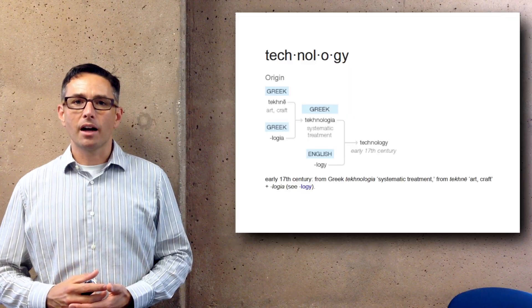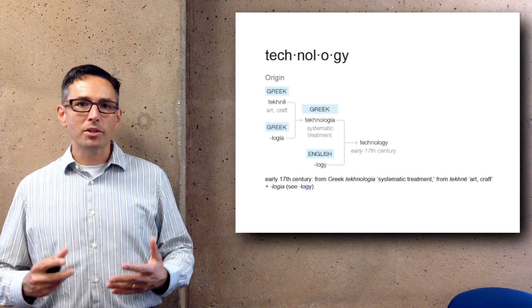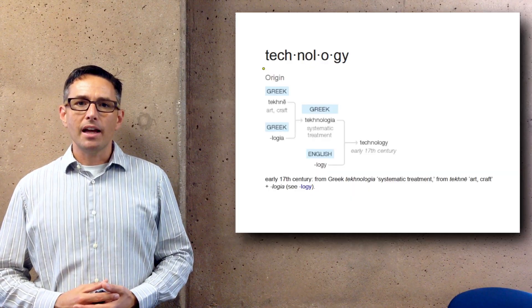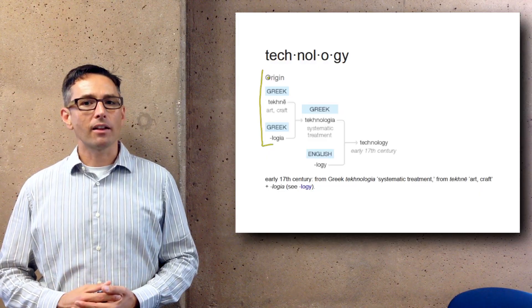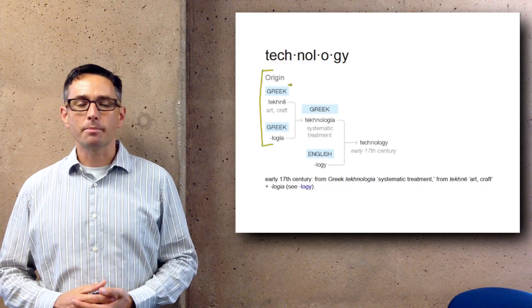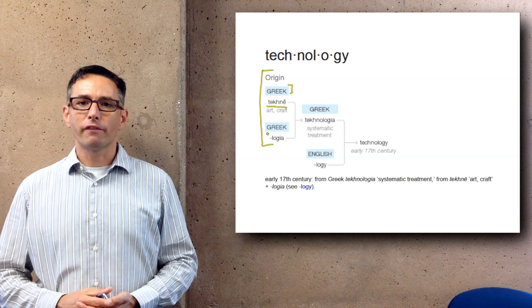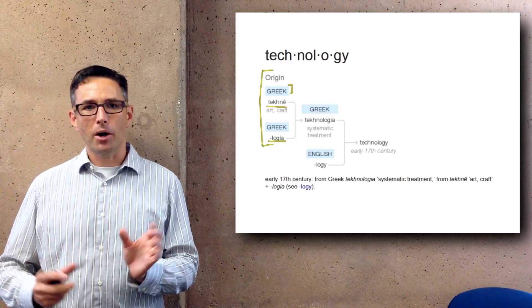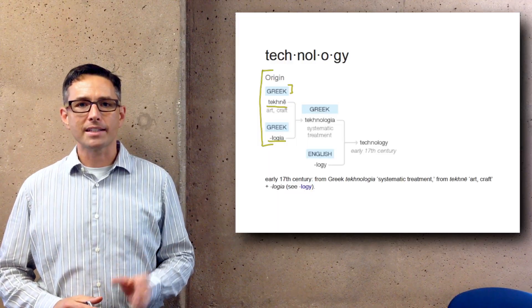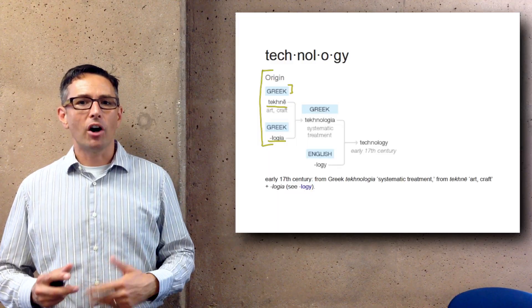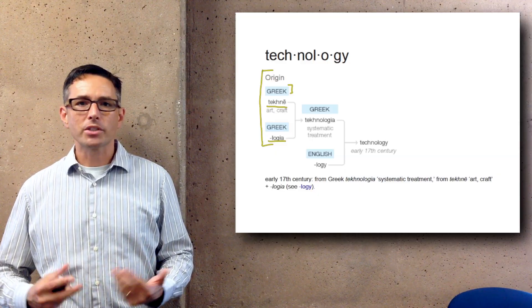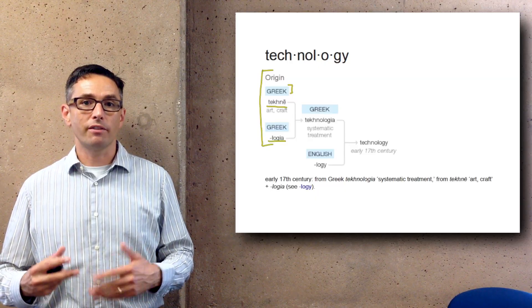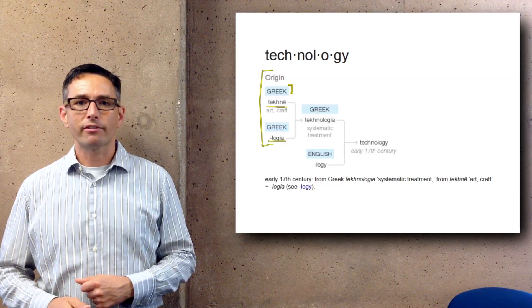So let's start by just looking at the word technology — global disruption and information technology, IT, is the name of the class. Technology has some of the same roots as other words we've been looking at in this class. It's a Greek word made up of two smaller components: the first being logia, or "the study of," and the second being techno, which originally had the idea of art or craft or skill. So together, technology has its roots in the history of the development of the word as the study of art or craft or skill.